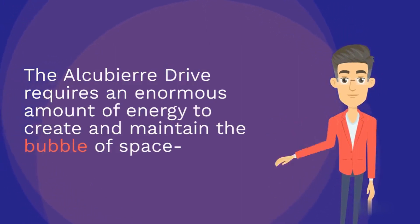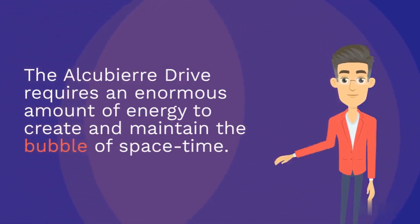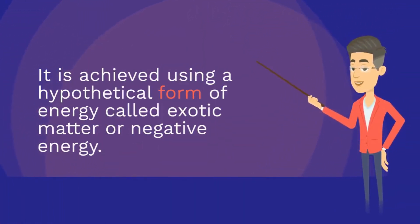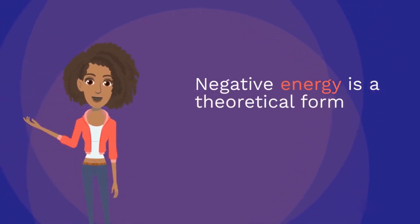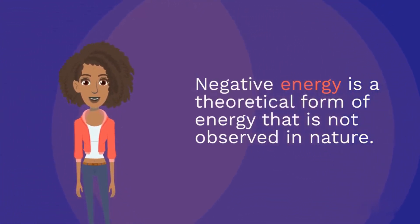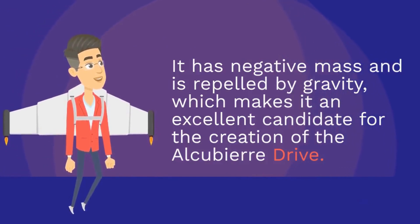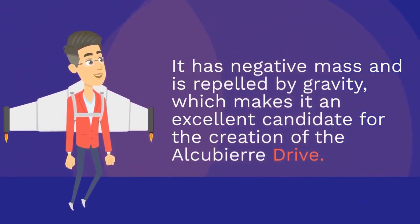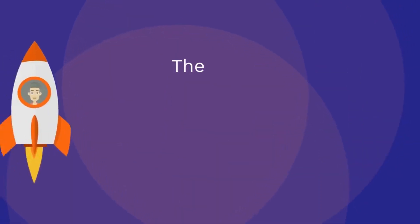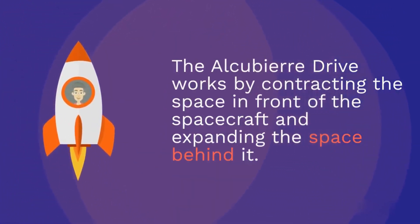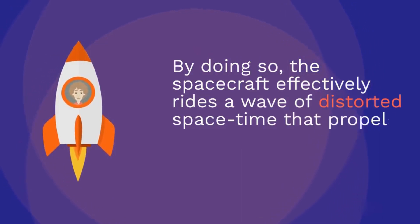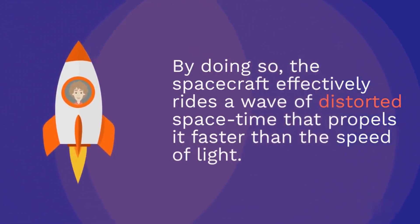The Alcubierre Drive requires an enormous amount of energy to create and maintain a bubble of spacetime. This is achieved using a hypothetical form of energy called exotic matter, or negative energy. Negative energy is a theoretical form of energy not observed in nature — it has negative mass and is repelled by gravity, making it an excellent candidate for the drive. The drive works by contracting the space in front of the spacecraft and expanding the space behind it, so the spacecraft effectively rides a wave of distorted spacetime that propels it faster than the speed of light.